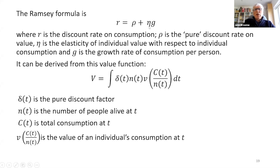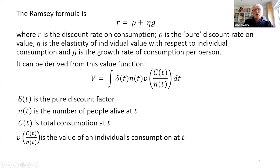Eta is a measure of how much increasing your consumption adds to your temporal well-being. It's called an elasticity — that's just an economist's notion. The Ramsey formula is: discount rate equals rho plus eta times g.